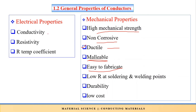Additionally, any conducting material should be easy to fabricate, should have low resistance at soldering and welding points, should be durable with a long lifespan, and its cost should be low. These are the general electrical and mechanical properties for any good conducting material.